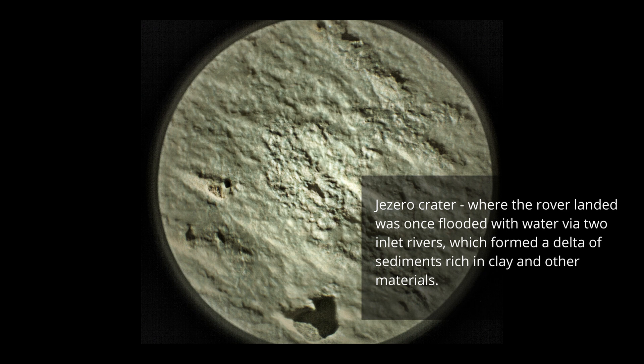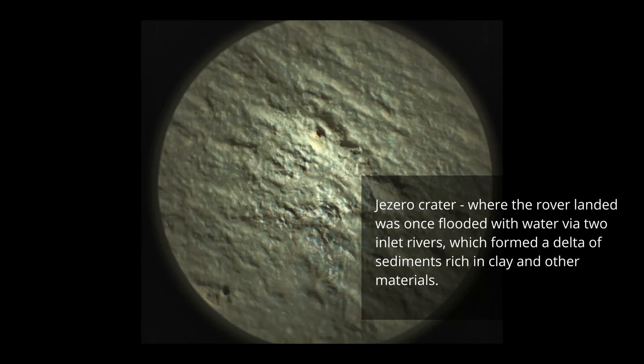Jezero Crater, where the rover landed, was once flooded with water via two inlet rivers, which formed a delta of sediments rich in clay and other materials.